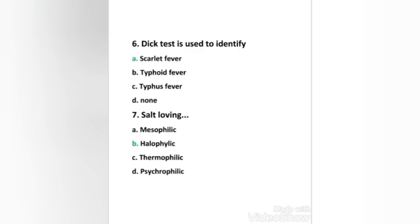Next question: salt-loving organism means — mesophilic, halophilic, thermophilic, or psychrophilic? The right answer is option B, halophilic.